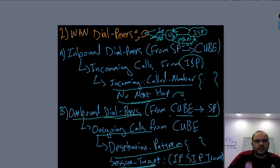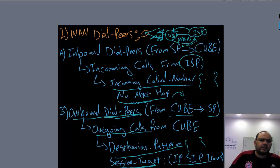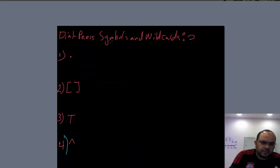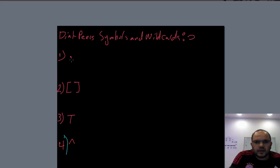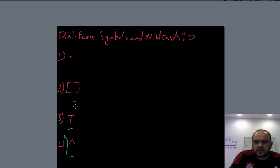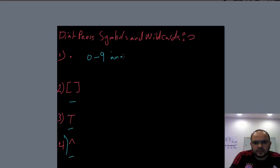We still need to explain wildcards and symbols. I will focus on four: dot (period), brackets, the letter T, and the hat (caret) symbol. The dot (period) means any single digit from 0 to 9 — it matches any one digit.